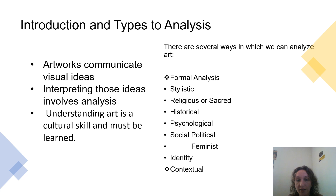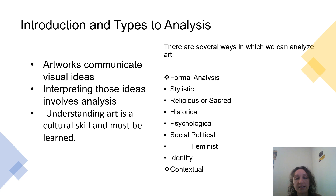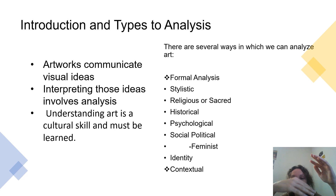There are several ways we analyze works of art: formal, stylistic, religious or sacred, historical, psychological, social, political — and a subsection of that is feminist — then identity, and contextual. They're in a specific order. Formal analysis is at the top and contextual is at the bottom. The order of operations in between is not as important, but those two positions will make a lot of sense, so you may want to write them down.